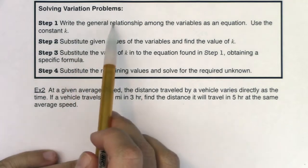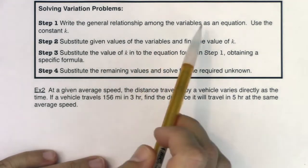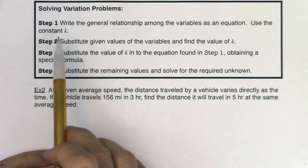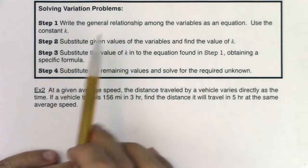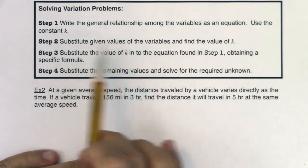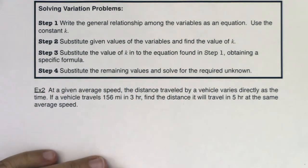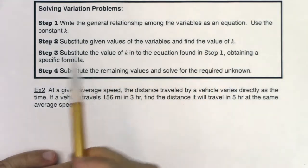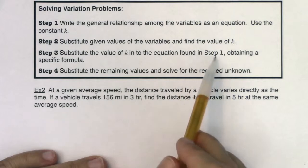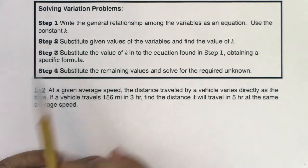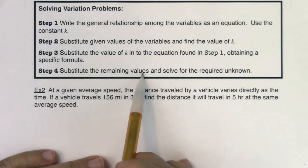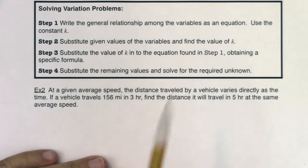We will write the general relationship among the variables as an equation and we will use the constant k. Once we set up our general equation, we will substitute given values of the variable to find the value of k. We will substitute the value of k into the equation found in step one, obtaining a specific formula, and then we will substitute the remaining values and solve for the required unknown.